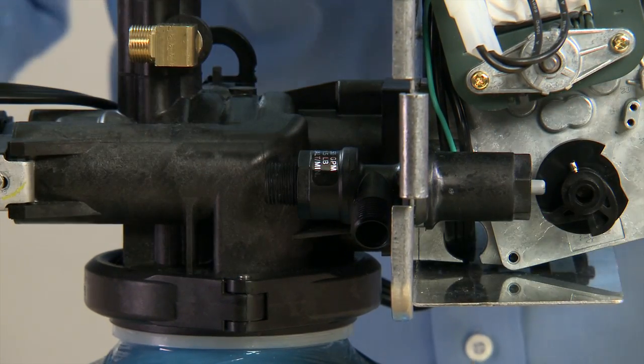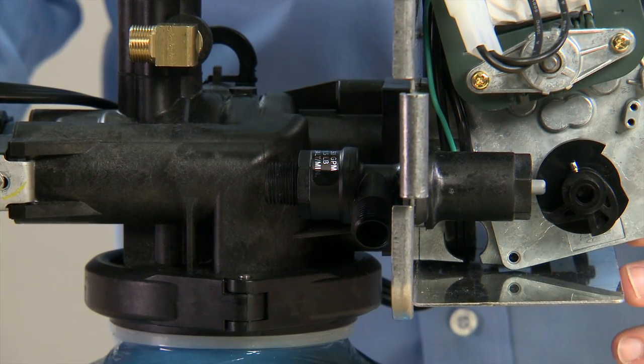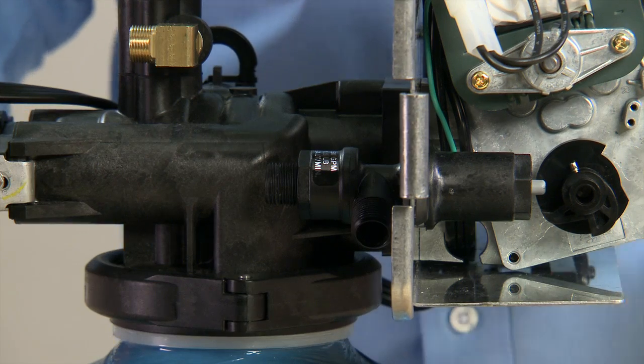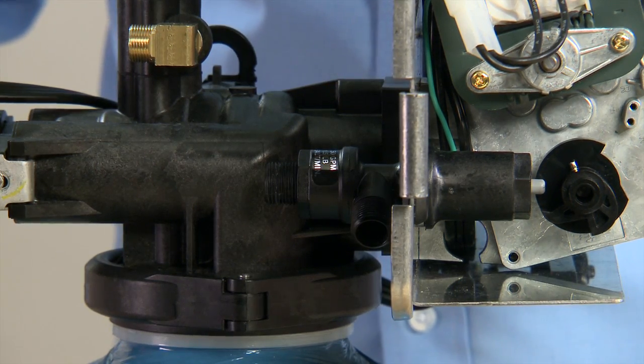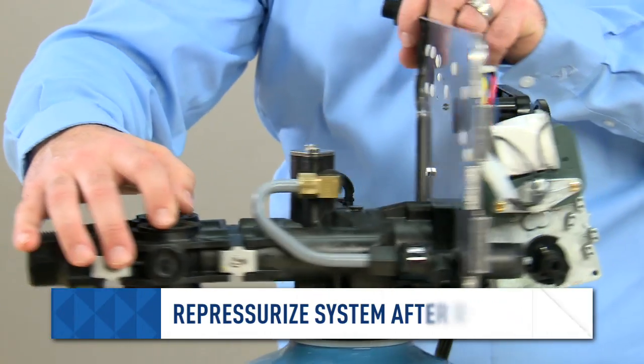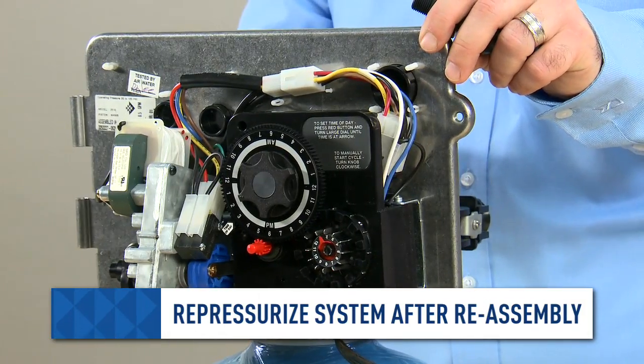Tighten all connections and make sure everything is airtight. Since these are flare connections, no plumber's tape should be used. You can then re-pressurize and test your progress.